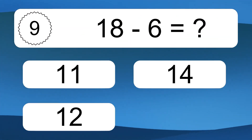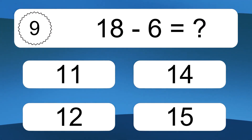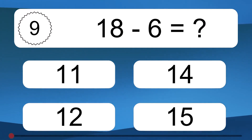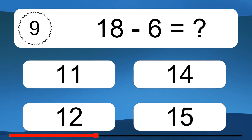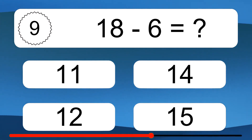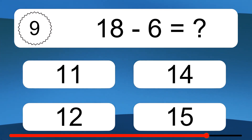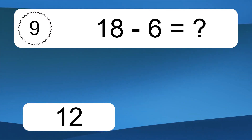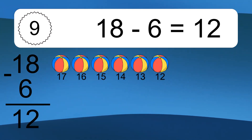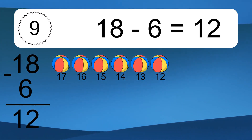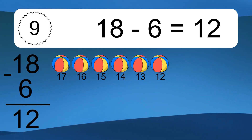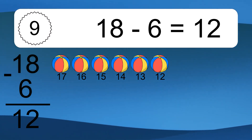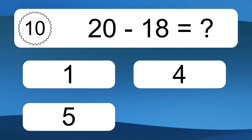18 minus 6 equals what? 18 minus 6 equals 12. Let's count it: 17, 16, 15, 14, 13, 12.